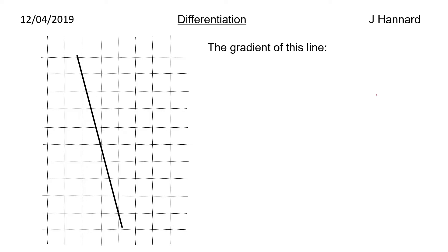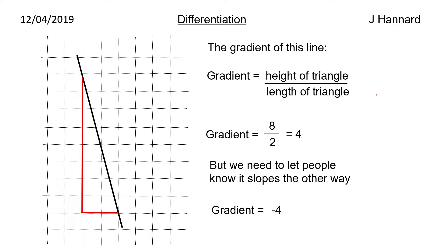So the gradient of a line, if you've got squared paper you can basically count the change in y over change in x. We've got the gradient equals the height of the triangle over the length of the triangle, so it's actually 8 over 2 which is 4. But remember it's going the other way so it's going to be minus 4.